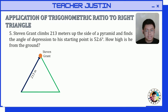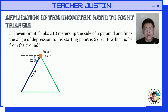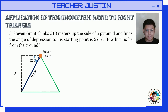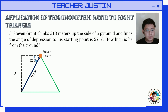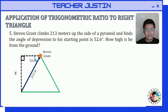He looks down from his position, creating an angle of depression of 52.6 degrees. We're looking for how high he is from the ground, so we draw a broken line and represent that height with variable x. This forms a right triangle, so we can use SOH-CAH-TOA.